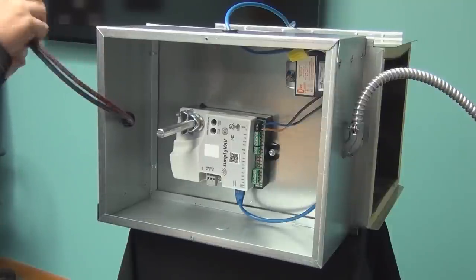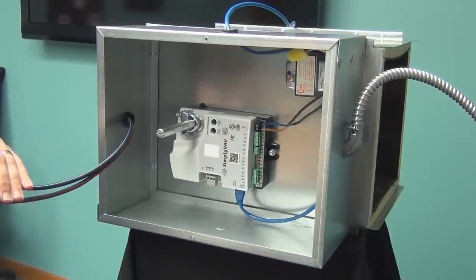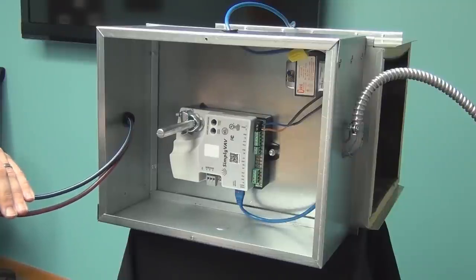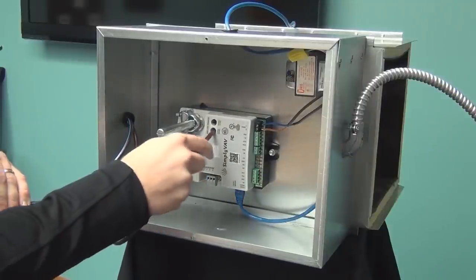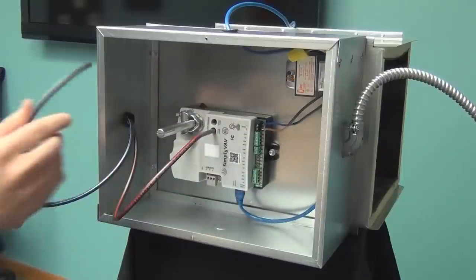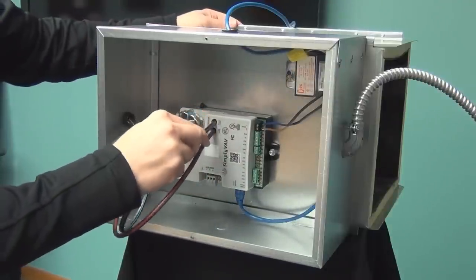The final connection is the airflow sensor. In this installation, we are using the flow pickup that is supplied with the BFU box. Connect the high side of the airflow pickup to the high port on the controller. Connect the low side of the airflow pickup to the low port on the controller.